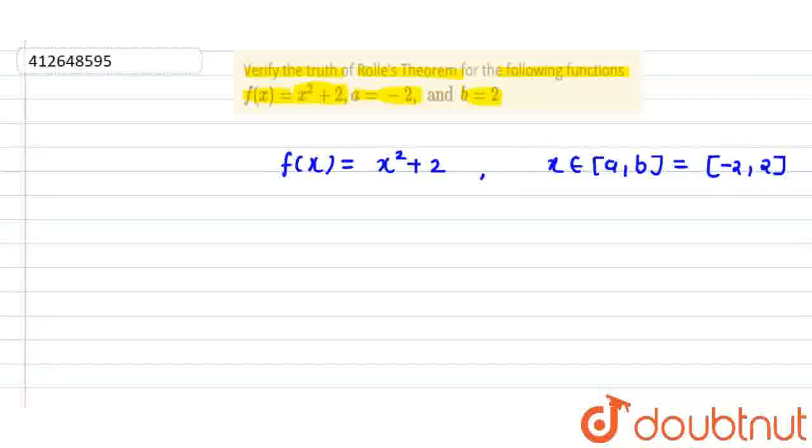This is the interval. So now we will see Rolle's theorem's first and second condition. What is the function? It's continuous and differentiable. And we will see here that this is our quadratic polynomial, and every polynomial is continuous and differentiable everywhere.